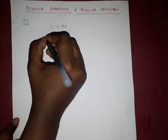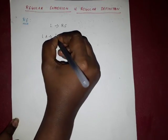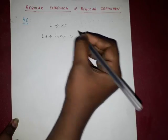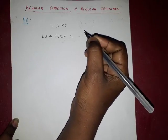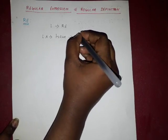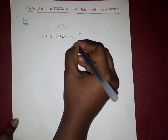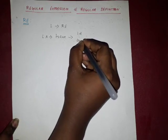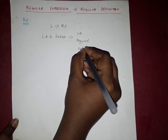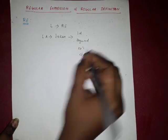In lexical analysis, we have to identify the tokens. A token is nothing but a sequence of characters with some collective meaning. There will be a lot of types of tokens: identifiers, keywords, numbers, and so on.